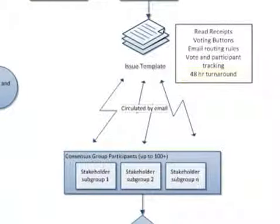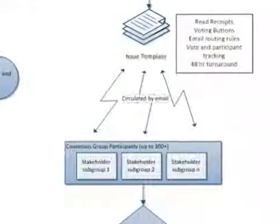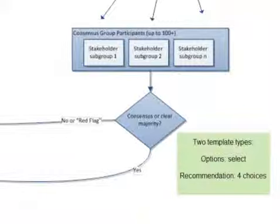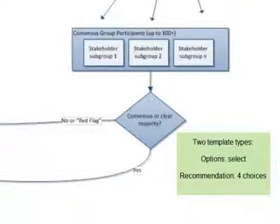The templates will be sent to you by email, one at a time, and you will have 48 hours to review the issue and cast your vote. If several options are provided, you will select the option you favor most. If it's a recommendation, there will be four vote types that you will have available to you.